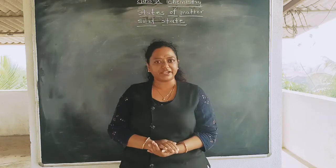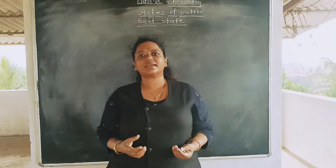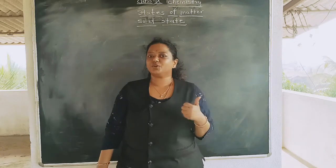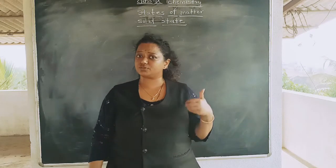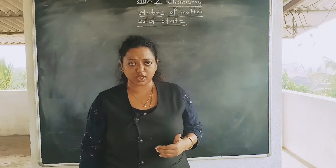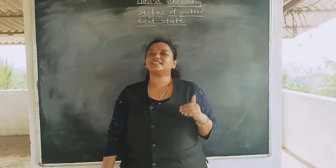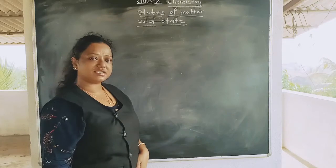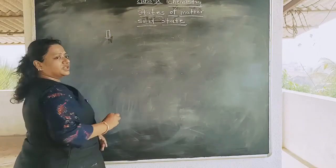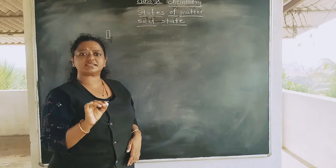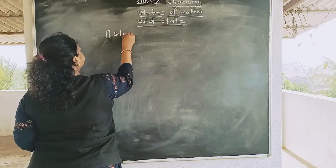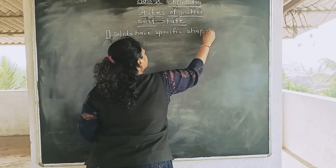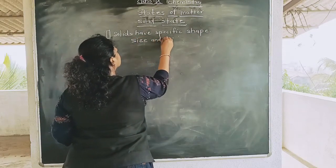In Class 9, you are going to learn a little more in detail about solid, liquid, and gaseous states. So let's start our today's topic — the solid state of matter. The first property or characteristic of the solid state is that solids have a specific shape, size, and volume.